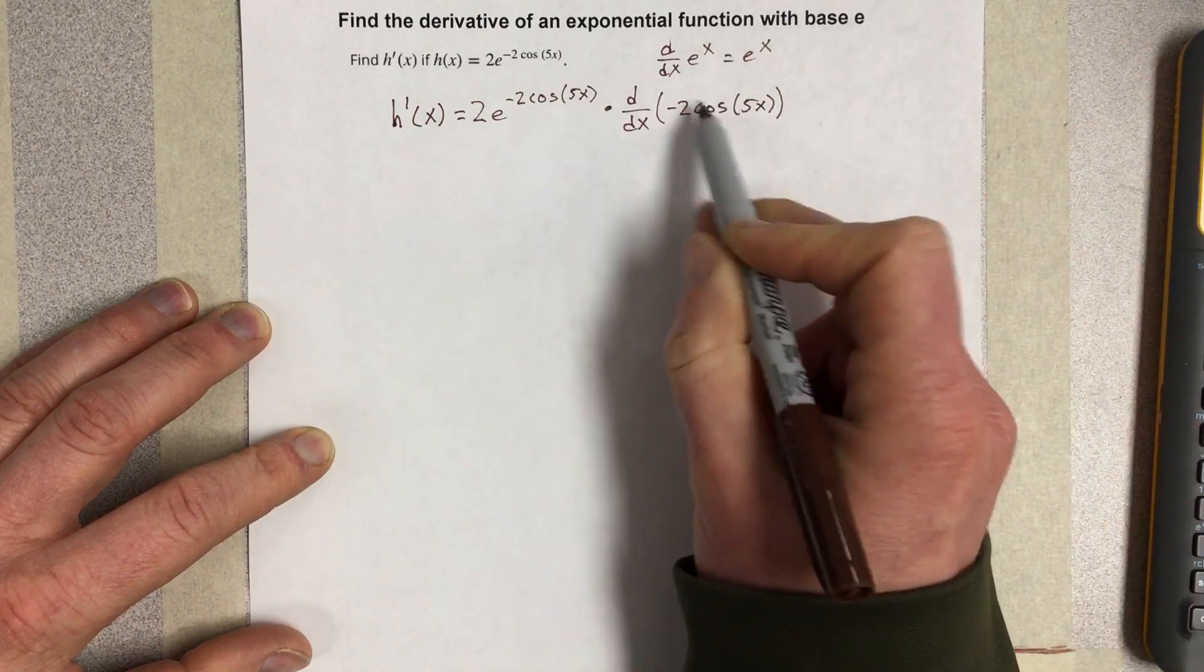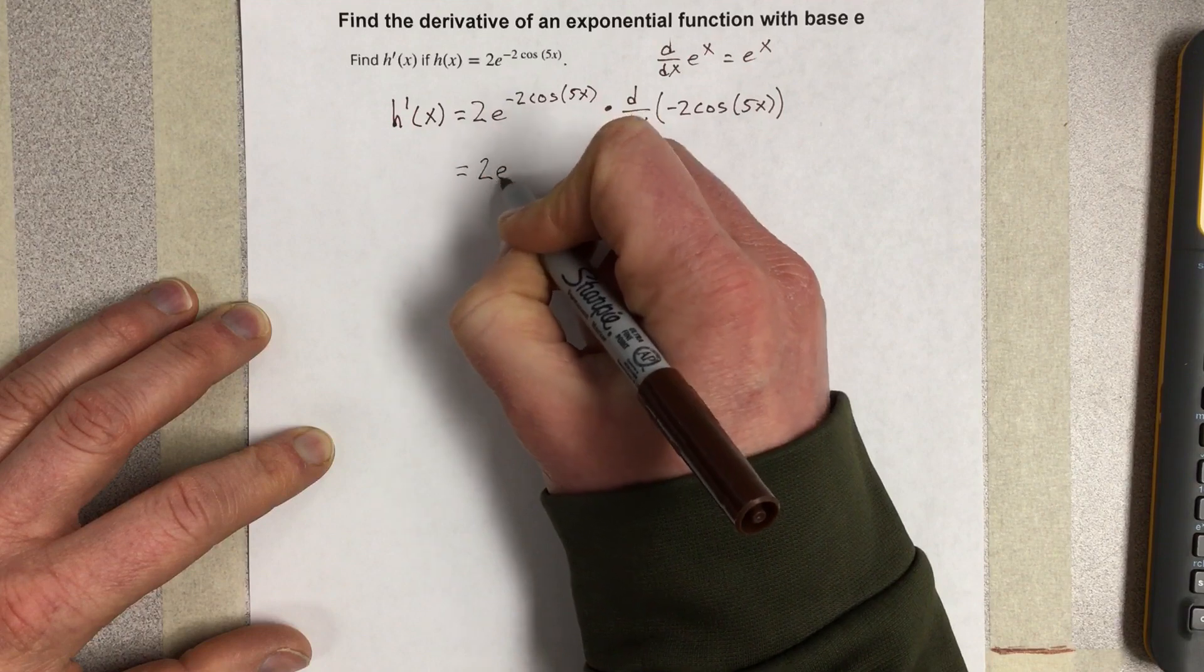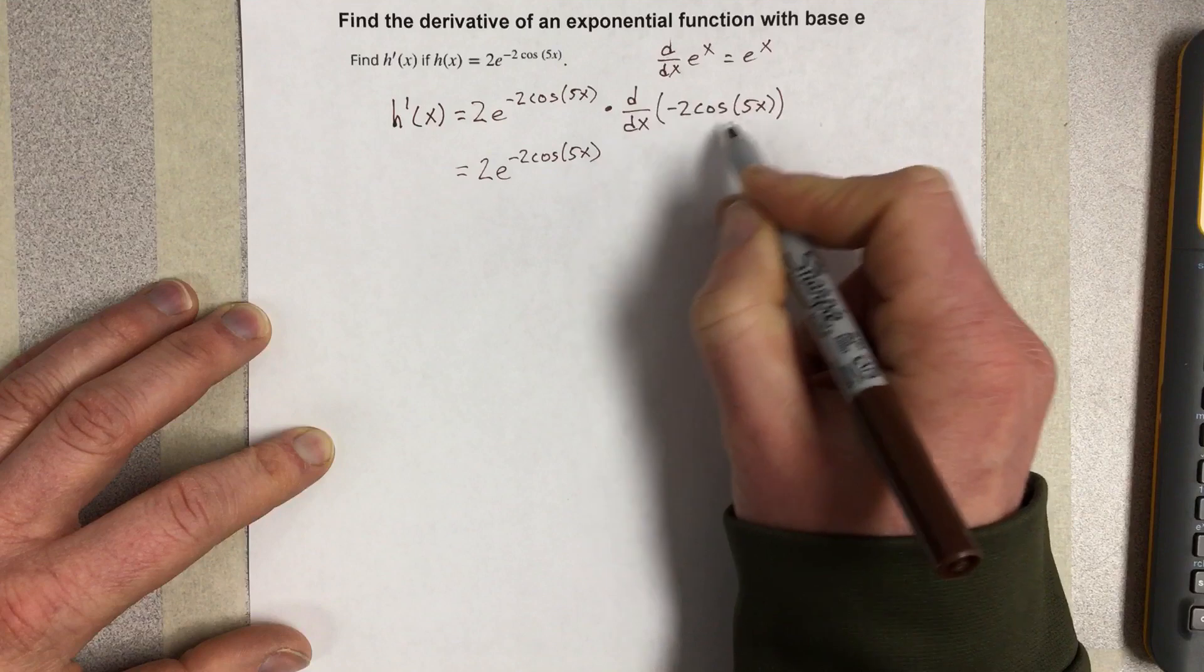Now the derivative of this negative 2 cosine 5x, we're going to get 2e to the negative 2 cosine 5x. But I also have a chain rule right here.